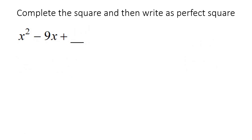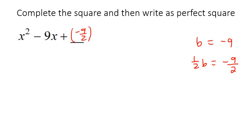And then our last example — b here is negative 9, so half of that would just be negative 9 over 2. So that would go to the power of 2, then you're just going to open up your bracket and say x take away 9 over 2. And that's the basics of completing the square. We weren't solving equations or anything like that — this is just the introductory phase for completing the square.